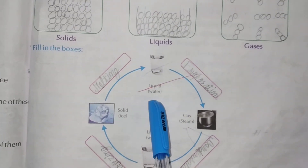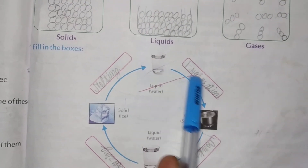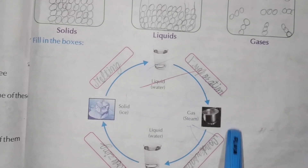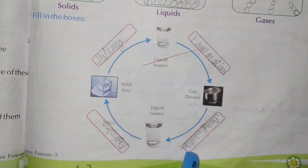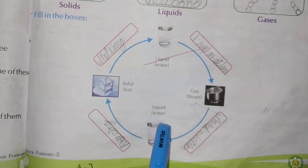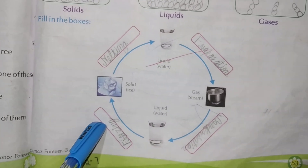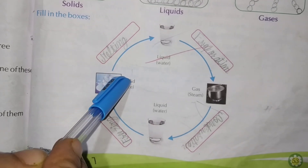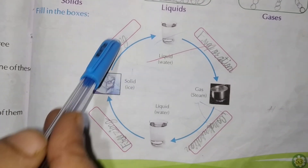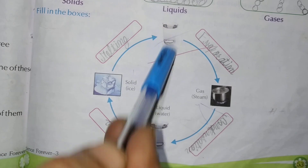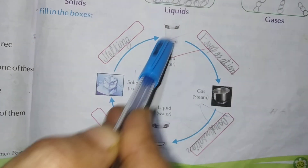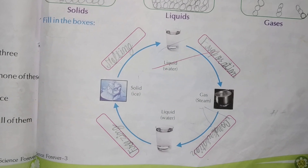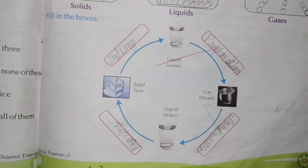Draw and fill in the boxes. Number 1: Liquid water — through evaporation it changes into gas or steam. Through condensation it changes back to liquid water. Through freezing, water changes into ice, which is solid. Through melting, it becomes water again. This cycle continues: evaporation, condensation, freezing, melting.